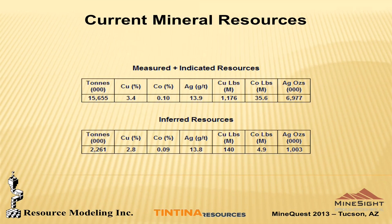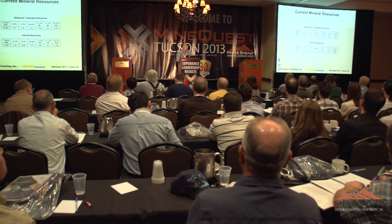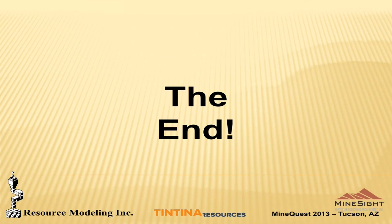Right now, there's about 16 million tons of measured and indicated resource with an average copper grade of 3.4% and 0.1% cobalt. There's about 1.2 billion pounds of copper resource identified to date in those three horizons, and another 2 million tons of about 2.8% copper as inferred resource. These resources were tabulated at 1.5 and 1.6% copper cutoff grades. Thank you very much.